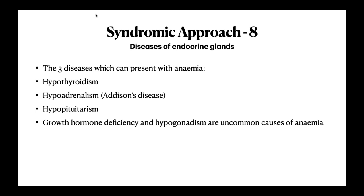Don't forget these three often-forgotten endocrine diseases that very commonly present with anemia: hypothyroidism, Addison's disease, and hypopituitarism. If you don't think of them, you will never investigate and never find them. If the patient has no other cause — no cytopenias, no immunosuppression, no family history, no hemolysis, no infections, no malignancies — always consider endocrine diseases. Look for their features in the patient, and if there is the slightest doubt, do the appropriate investigations. Anemia is a very prominent feature of all three of these diseases.